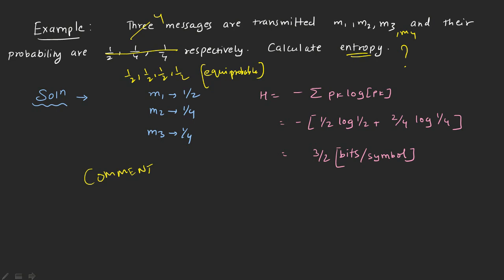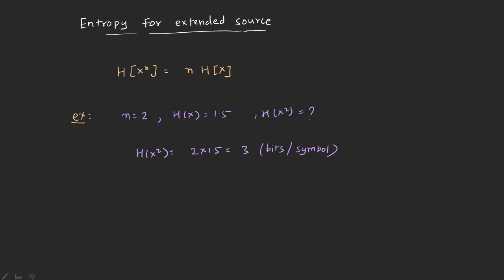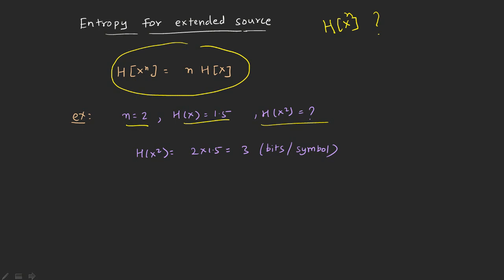Now let's move to the last variation of entropy — entropy for the extended source. Up till now you know how to find entropy for X. If you have X raised to n, use the formula: H of X raised to n equals n times H of X. For example, if n equals 2 and H of X equals 1.5, then H of X squared equals 2 times 1.5, which equals 3 bits per symbol. The unit remains the same.